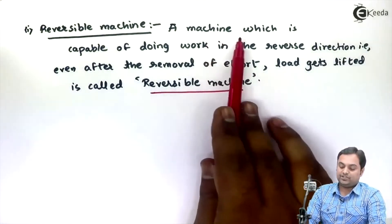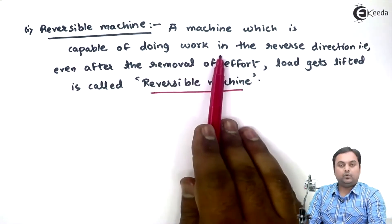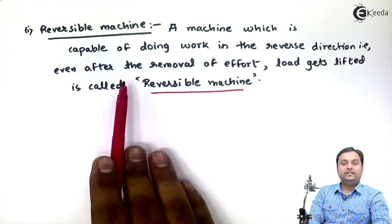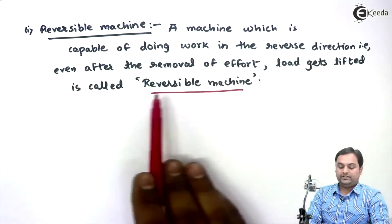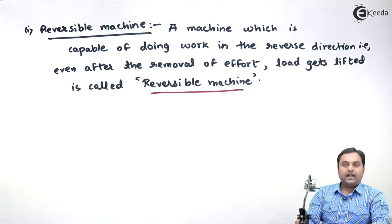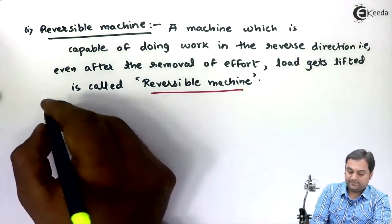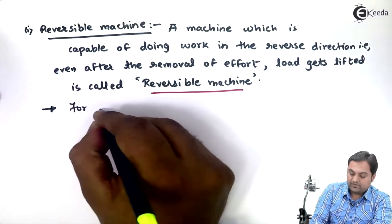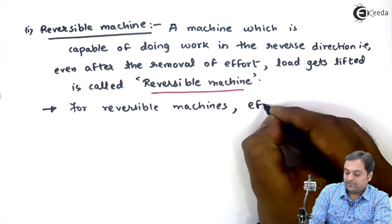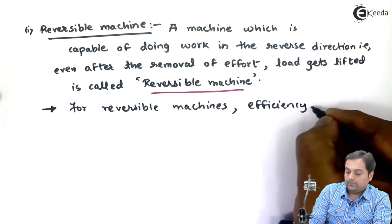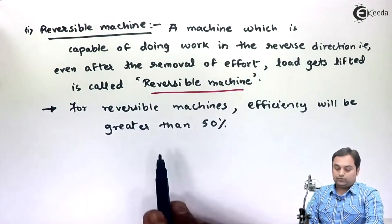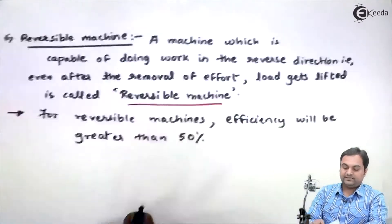So a reversible machine is a machine which is capable of doing work in the reverse direction. When we say work is done in the reverse direction, it means that even after the removal of effort, load gets lifted, and such a machine is called a reversible machine. The condition for reversible machines is that efficiency will be greater than 50 percent.